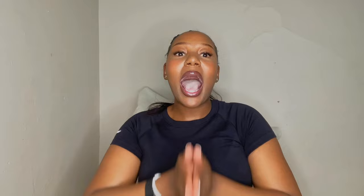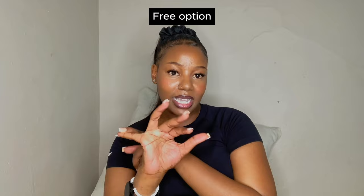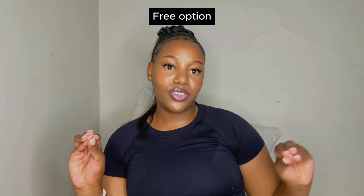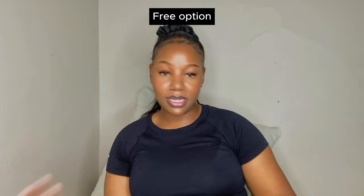You're probably asking yourself: after doing the whole Red, Orange, and Green method, how do I actually master the topics? There are two options — one is free and one costs money. For the free option, since maths is a build-up subject, you need a Grade 10, Grade 11, and Grade 12 textbook. Luckily, there's an online platform called Siyavula that offers all three textbooks, and I'll leave a link for you to access them.